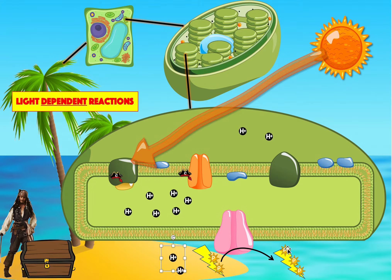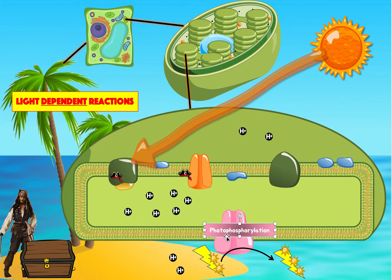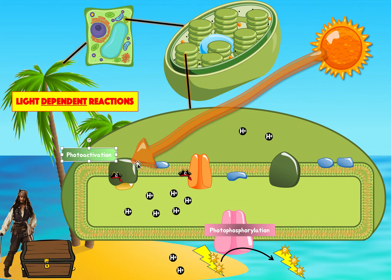This process of making ATP from ADP using light — because light triggered this whole process — is called photophosphorylation. This makes sense because 'photo' means light, and 'phosphorylation' means to add a phosphate group. So photophosphorylation is the process of using light, which activated this whole cascade of reactions, to make ATP from ADP. The process of light activating these electrons is called photoactivation.